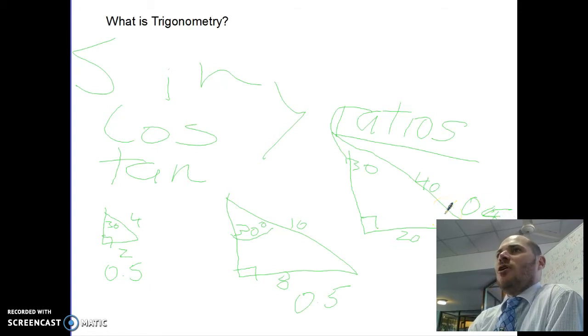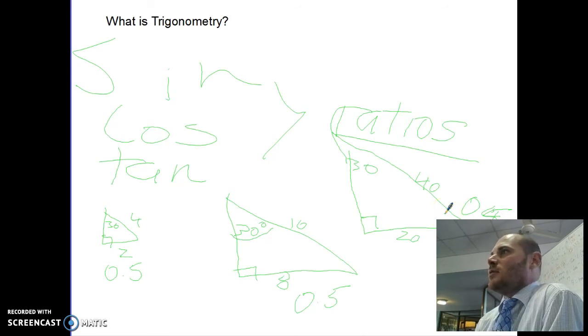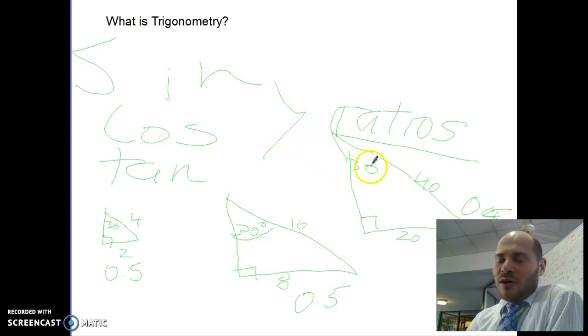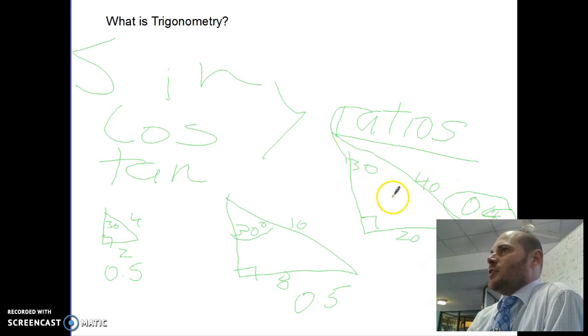So after time, they worked out and went through all of those. So no matter how big the triangle was, if the angle there was 30 degrees, then the opposite side divided by the hypotenuse always ended up at 0.5. So 0.5 is the ratio. 0.5 is your sine ratio for 30 degrees.